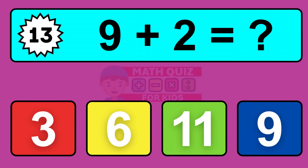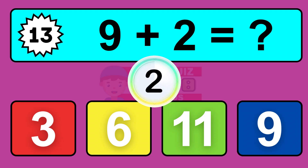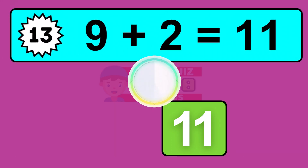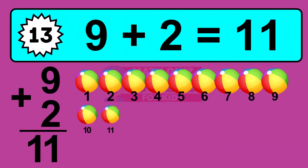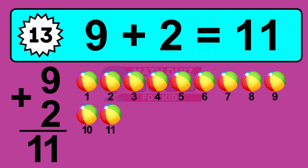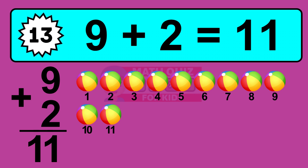Question 13. 9 plus 2 equals what? The answer is 9 plus 2 is 11. Let's count it: 1, 2, 3, 4, 5, 6, 7, 8, 9, 10, 11.